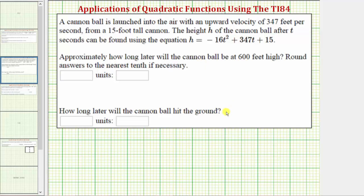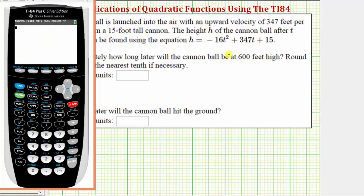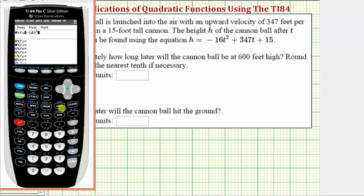We'll be answering these questions graphically using the TI-84 graphing calculator. The first step is to enter the equation into y1. To do this we press y equals. We'll be using y instead of h and x instead of t. So we enter negative 16x squared plus 347x plus 15.